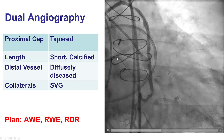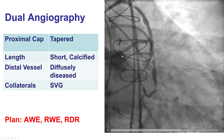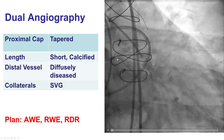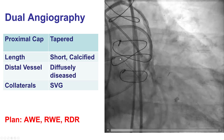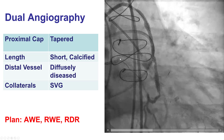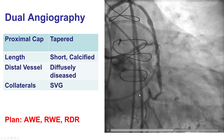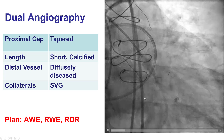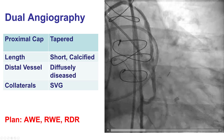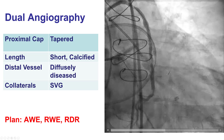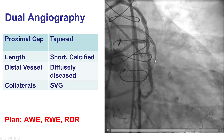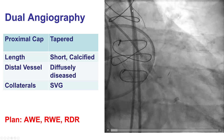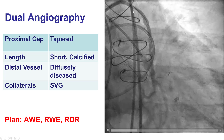This is a dual angiogram showing a CTO of the circumflex beginning at the ostium of the circumflex. The length is long, about 40 to 50 mm. The distal vessel is of good quality and is filling from a saphenous vein graft that is already developing recurrent restenosis.